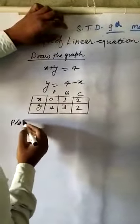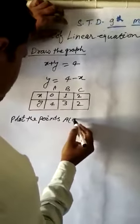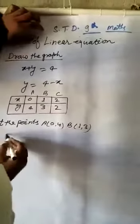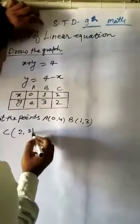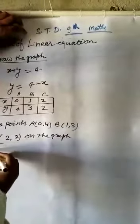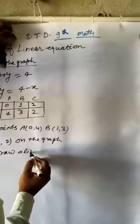Plot the points. Plot the points. A 0 comma 4, B 1 comma 3, C 2 comma 2. On the graph and draw a line.